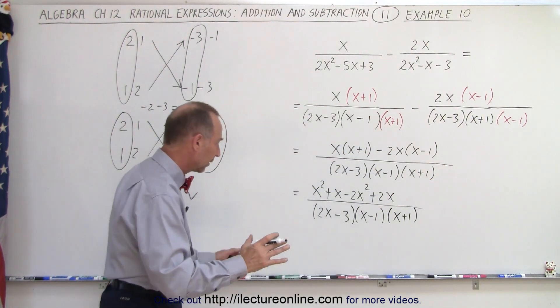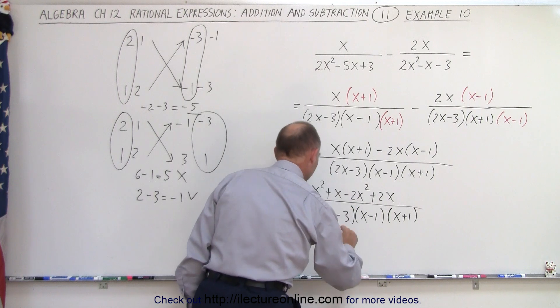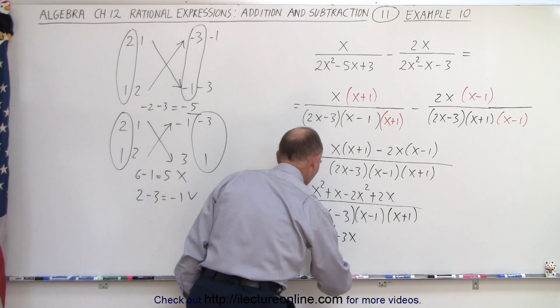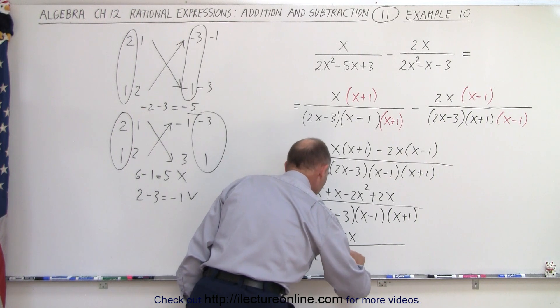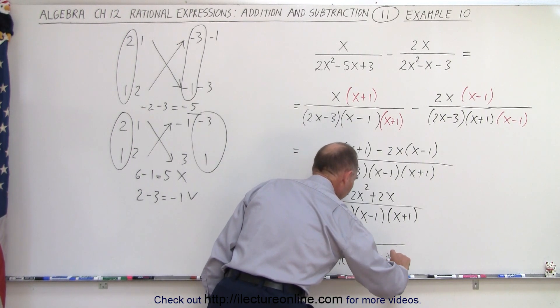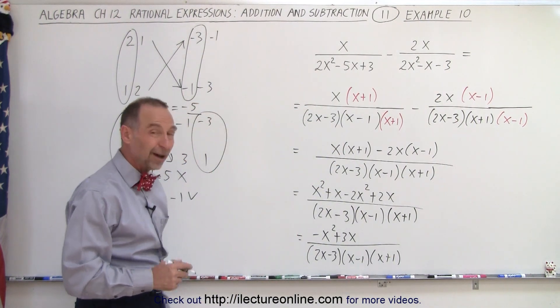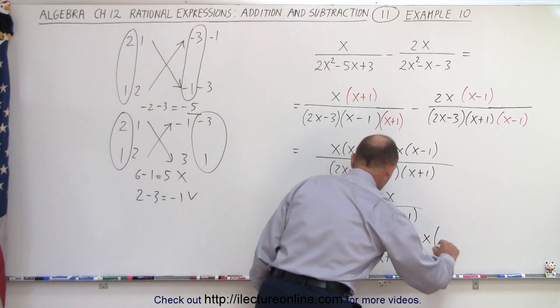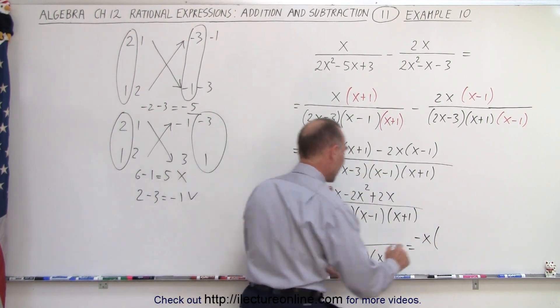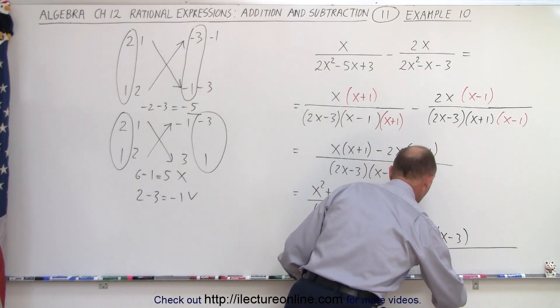Collecting common terms, this is equal to, well, we have a minus x squared plus 2x plus x is plus 3x, all divided by the quantity 2x minus 3 times x minus 1 times x plus 1. Now what we could do here is we could factor out a minus x. So this can be written as minus x times, when we do that, we get x minus 3 divided by 2x minus 3.